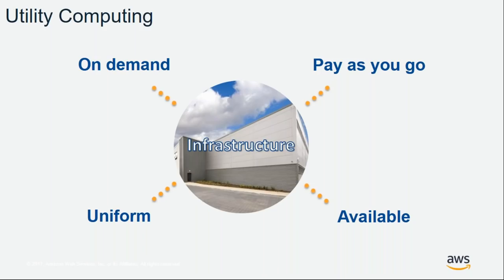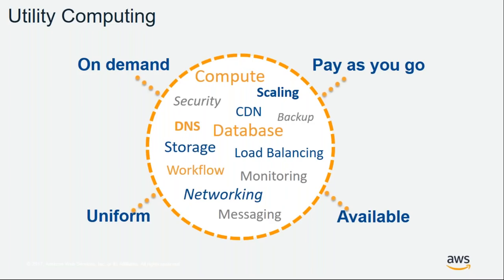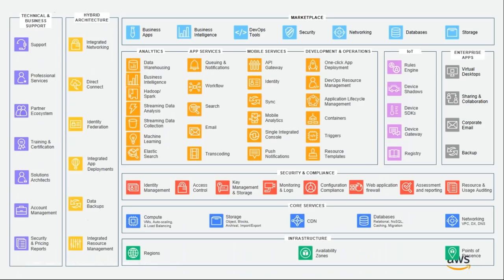This same concept can be applied to IT infrastructure — the ability to deliver IT infrastructure in an on-demand, pay-as-you-go, uniform, and available fashion to businesses around the world. By delivering IT via APIs, that essentially becomes what cloud computing is today: the ability to access compute, storage, databases, load balancers, and networking on-demand, pay-as-you-go, over APIs, taking away the hard work of providing IT infrastructure.